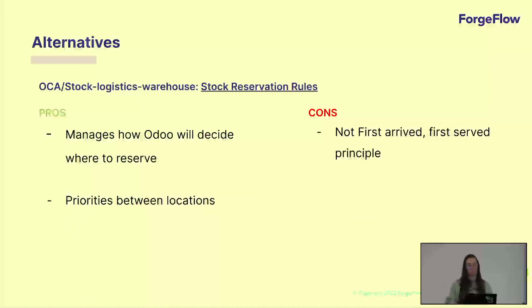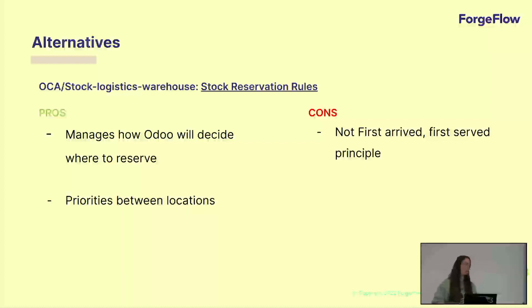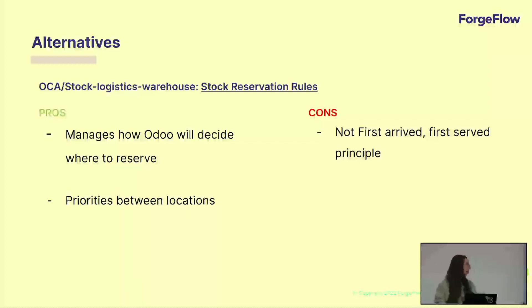Then we have the stock reservation rules module that Jack explained before in the talk. As he explained, you can set up different rules and manage the priorities you want to have, so within locations you can decide which locations Odoo will reserve first. You can also set some removal strategies for each location. But in this case, the first-arrived, first-served principle is not being accomplished because, as I explained in the case scenario, if there is no product, other sale orders can take that stock.